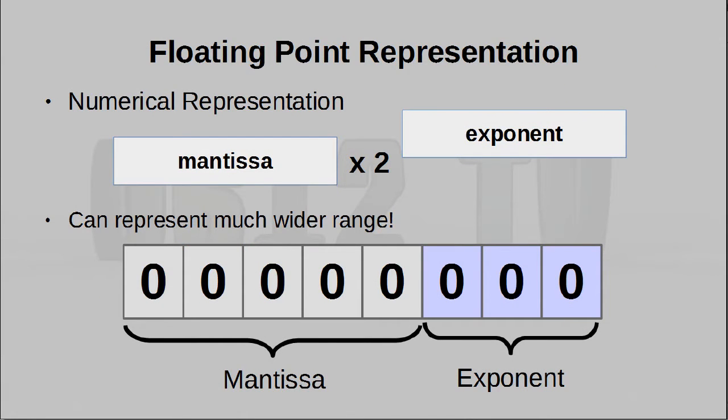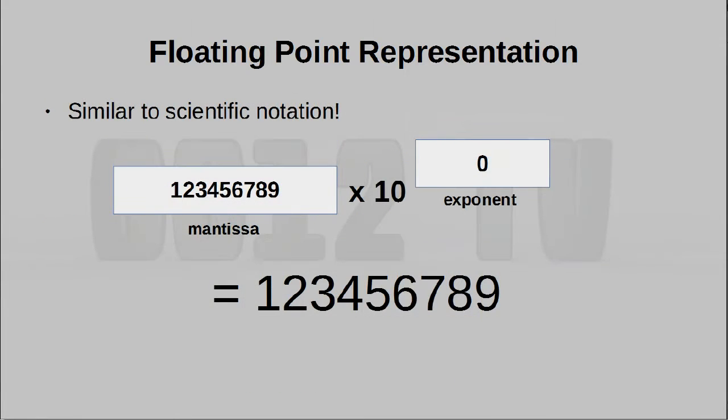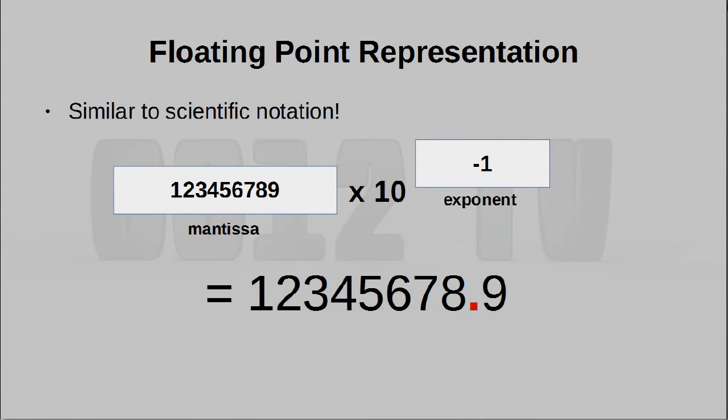A floating-point number represents your decimal value as a multiplication. Basically, you have to store two components, a mantissa and an exponent. This technique is very similar to what you might know as scientific notation from school. What's really cool about this method is that the location for the decimal point is variable, and depends on the exponent.